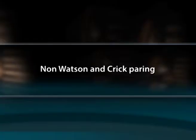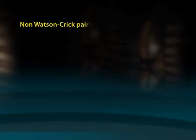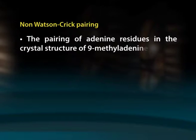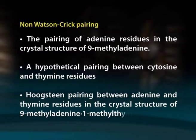Non-Watson-Crick base pairing: Pairwise combinations of hydrogen-bonded coplanar bases other than Watson-Crick pairings give rise to non-canonical or mismatch pairs. Unlike the majority of DNA structures stabilized by canonical Watson-Crick base pairing between adenine-thymine and guanine-cytosine, those adsorbed on surfaces are often stabilized by non-canonical base pairing, quadruplex formation, and base-surface stacking. The most commonly seen non-Watson-Crick pairings include pairing of adenine residues in the crystal structure of 9-methyladenine, a hypothetical pairing between cytosine and thymine residues, and Hoogsteen pairing between adenine and thymine residues in the crystal structure of 9-methyladenine·1-methylthymine.